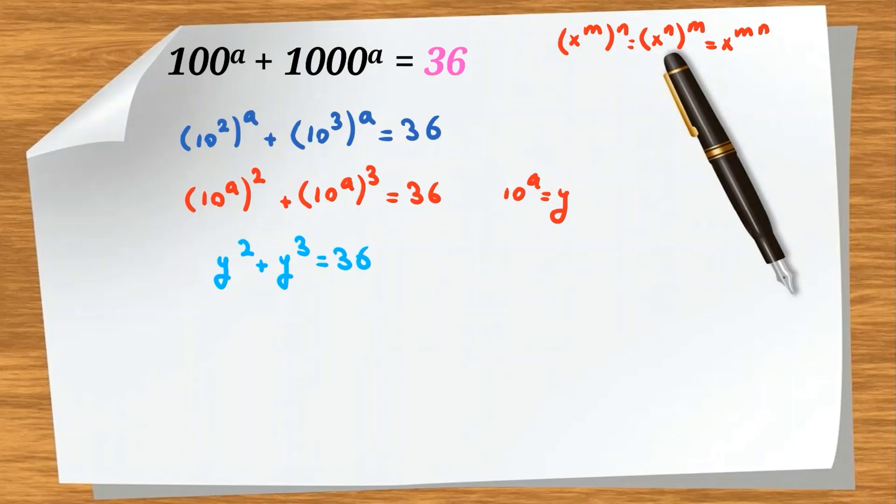Now, because the degree is 3, we should find at least one root. So if we check, for example, y=1 is small, y=2 is small, because it's 12, try y=3. If we check y=3, it will be 9, 3 squared is 9 plus 27, 3 cubed equals 36. So y=3 is one answer, and then we will find corresponding A.